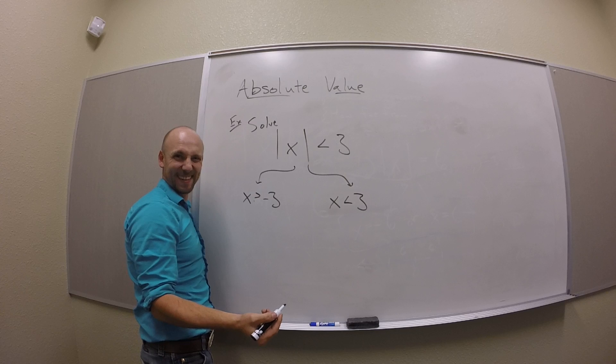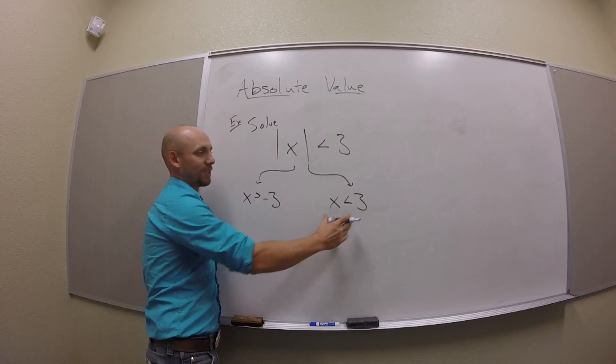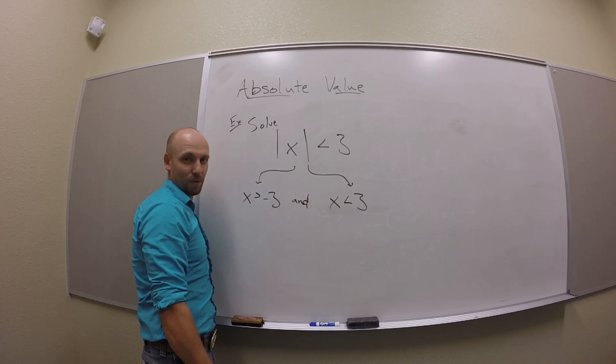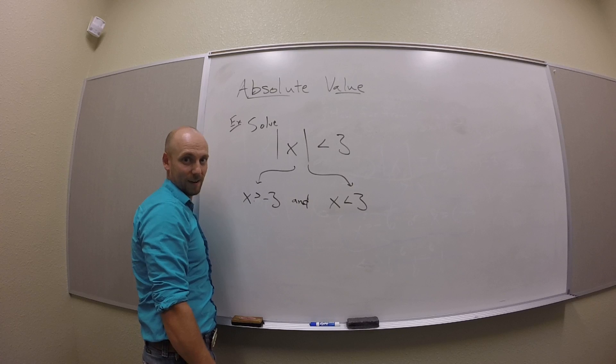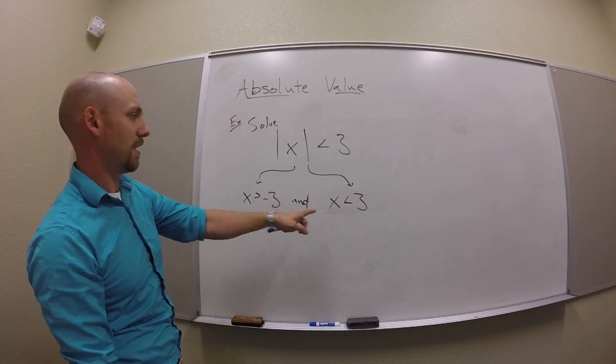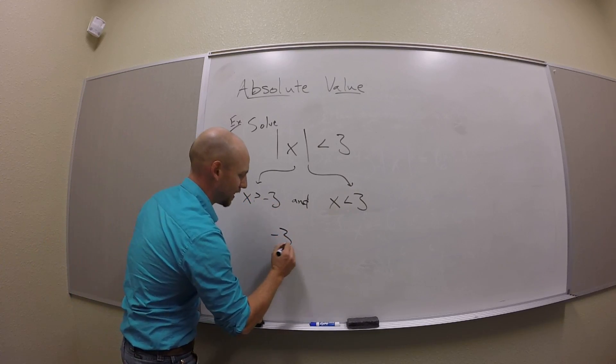It's closer to 0 than 3. So it's either this or it's that, and really it's got to be both of these. It's got to be both bigger than negative 3 and smaller than regular 3. I think I could write that this way.